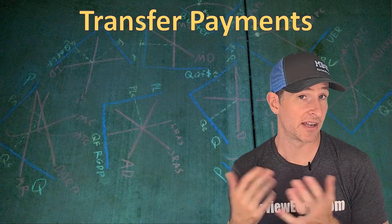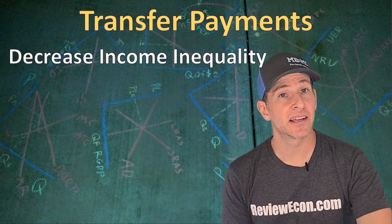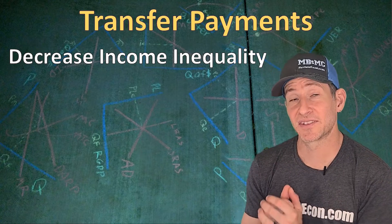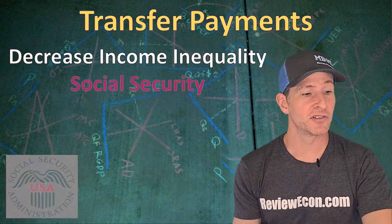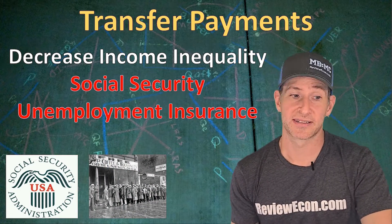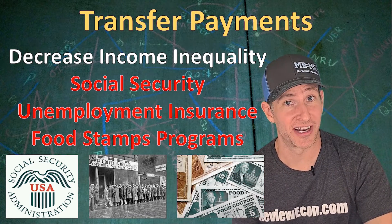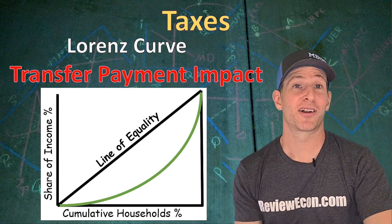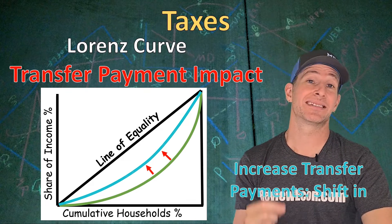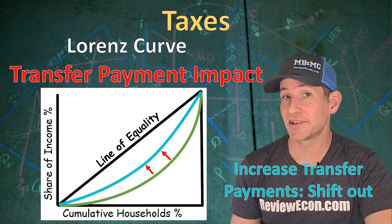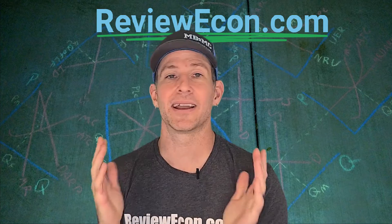Transfer payments are another tool that governments can use to mitigate income inequality. When people receive transfer payments, income inequality decreases. Anytime the government gives citizens money, we call those payments transfer payments. Examples include Social Security, unemployment insurance, food stamp programs, and Pell Grants for college financial aid. Increases in transfer payments shift the Lorenz curve inward as they decrease income inequality, while decreases in transfer payments increase income inequality, shifting the Lorenz curve outward.